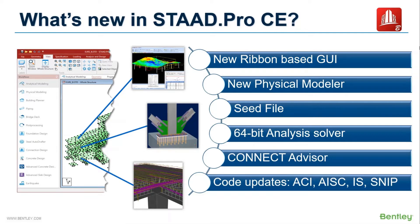Also, a new seed file option has been provided to decrease the modeling time by importing the settings from a similar STAT model. One of the major enhancements of Connect Edition is the inclusion of a 64-bit solver which can use the full capacity of the processor. So if you use a powerful machine, your analysis time will be reduced in Connect Edition.